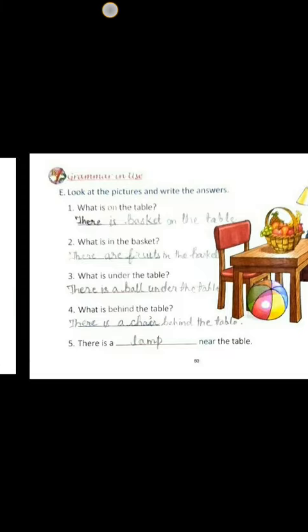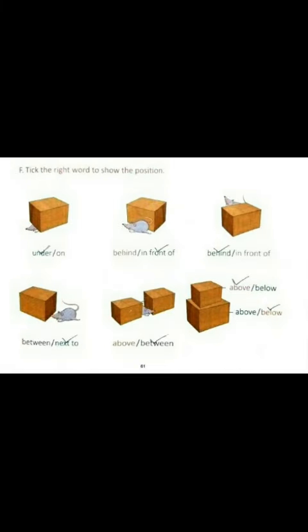Now, exercise F. Tick the right words to show the position. Children, here you see the pictures, a box and position of rat. Then you have to tick the right words.